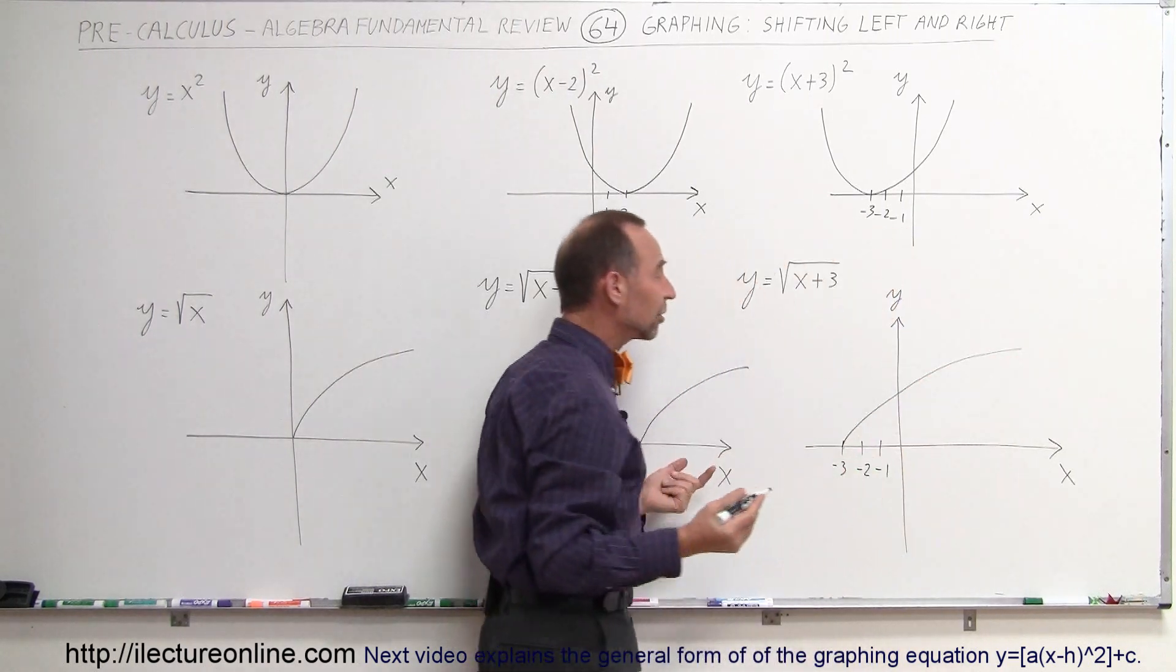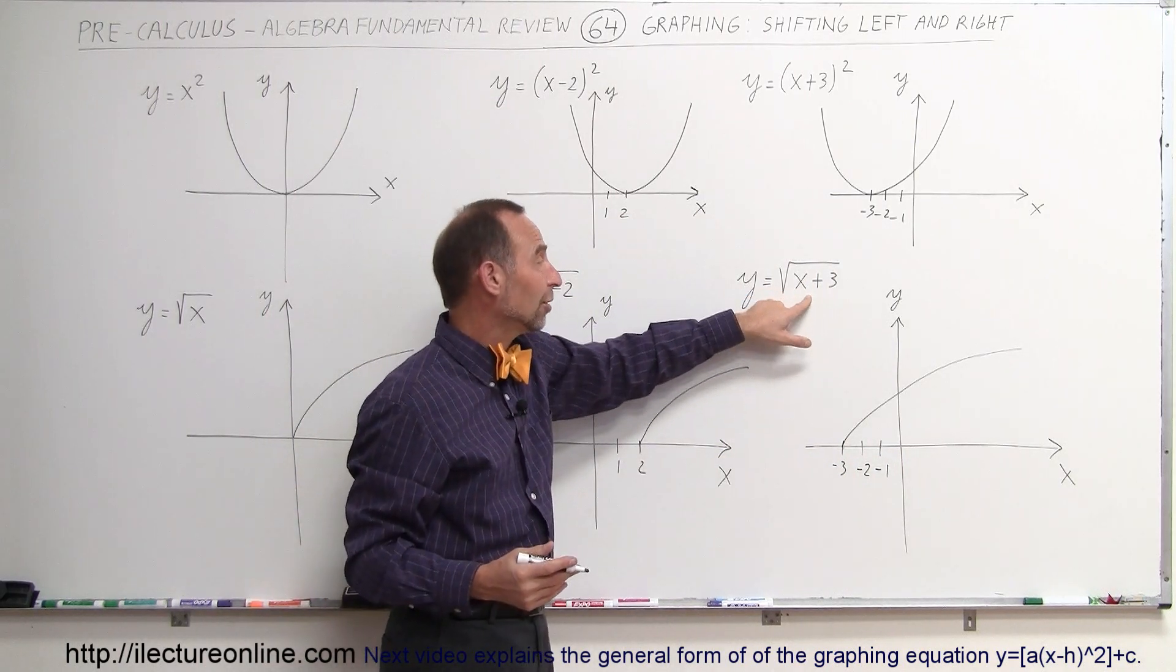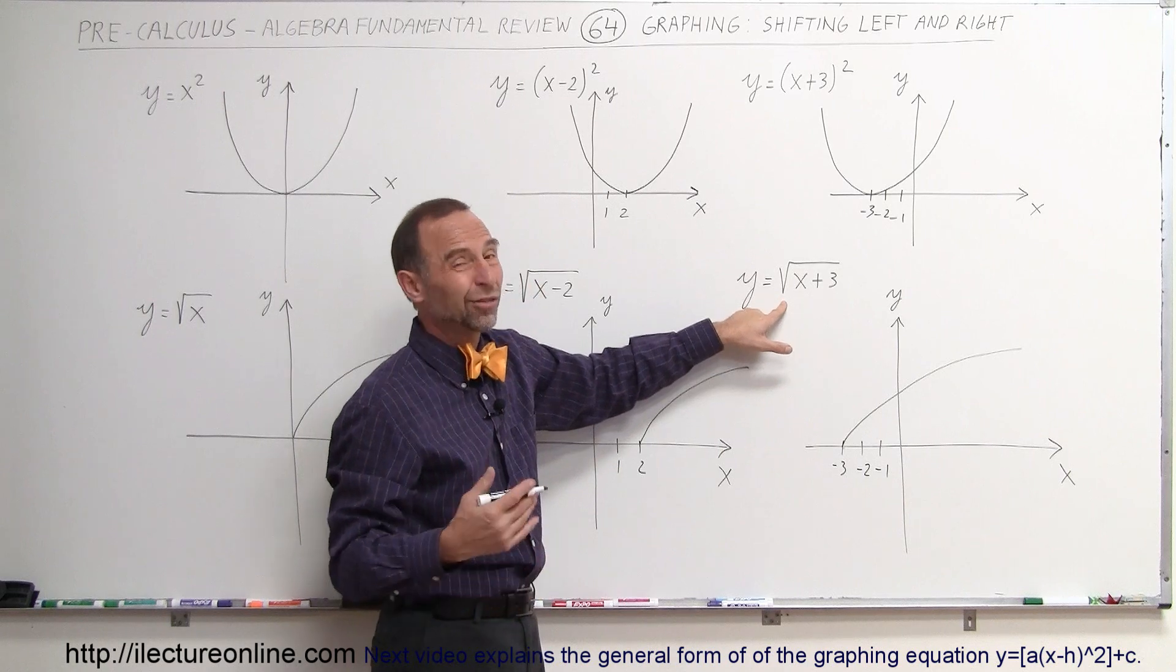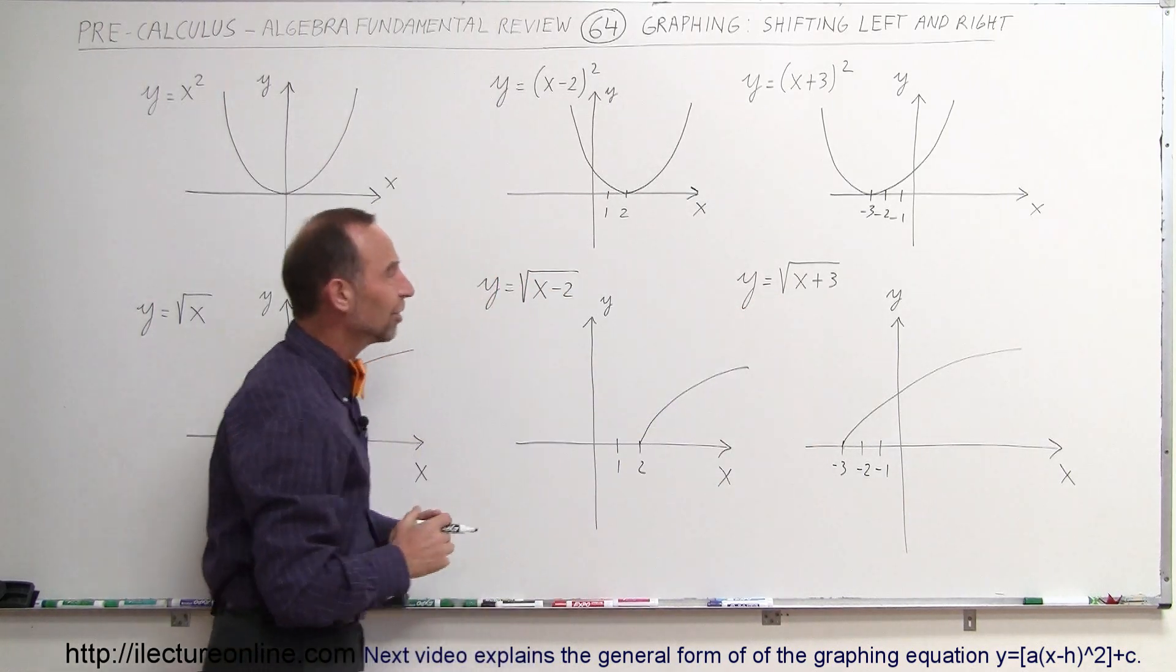And again, you can check the graph. Let's say you plug in the value of x equals negative 3. Negative 3 plus 3 is 0. Y will be equal to the square root of 0, which is 0. And that's exactly what it is over there. So again, you can check and see that it works.